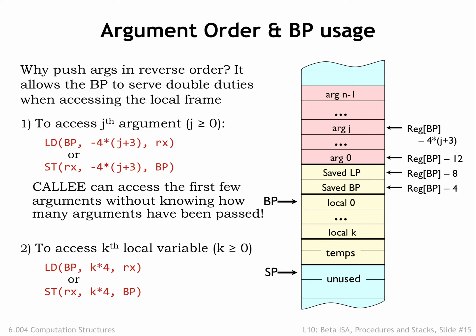The local variables are also at fixed offset from BP. The first local variable is at offset 0, the second at 4, and so on. So we see that having a base pointer makes it easy to access the values of the arguments and local variables using fixed offsets that can be determined at compile time. The stack above the local variables is available for other uses, e.g., building the activation record for a nested procedure call.